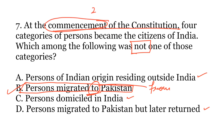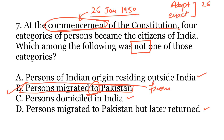Commencement here means 26th January 1950. This is a very important distinction: the constitution commenced on this date, whereas it was adopted and enacted on 26th November 1949. On 26th November 1949 the constitution was adopted and enacted, whereas on 26th January 1950 the constitution commenced. This distinction is mentioned in the preamble and must be kept in mind.